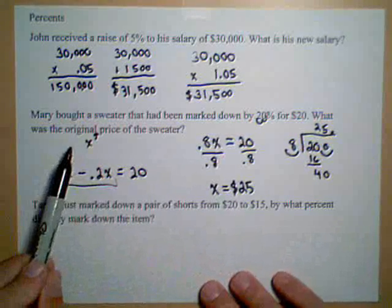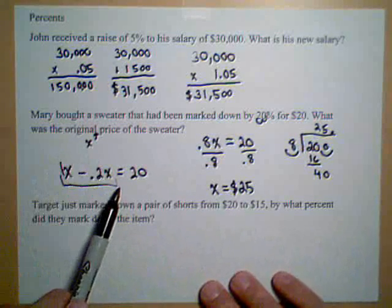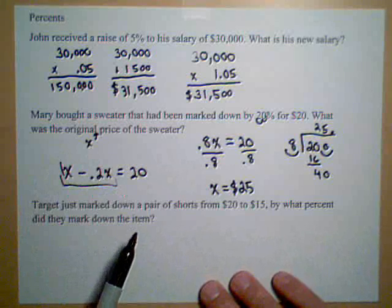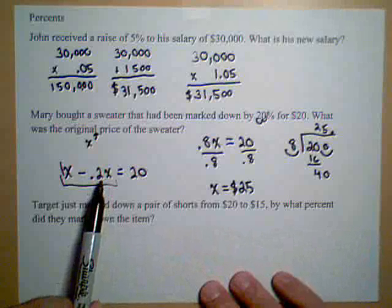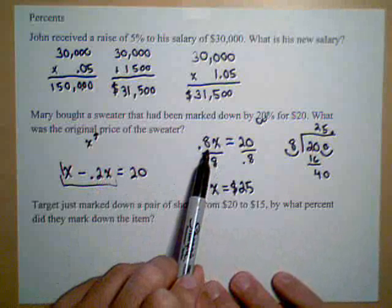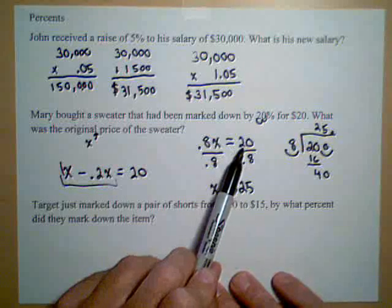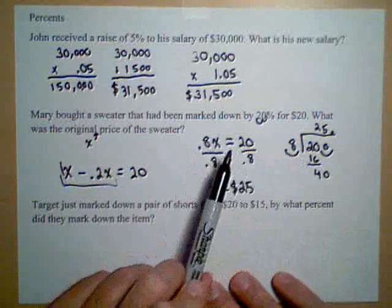So what we need to look for is the percentage markdown. We can use what we found out in this problem in order to solve this problem. So let's go back up to this problem. We saw if we took off 20% that we ended up calculating 80%. So 80% of the original price was $20. So we're going to set up something similar here.